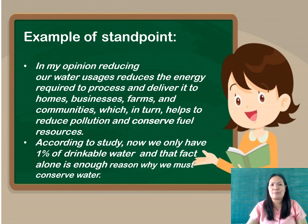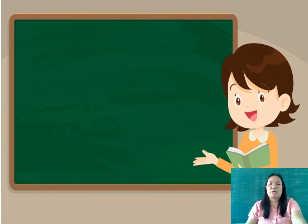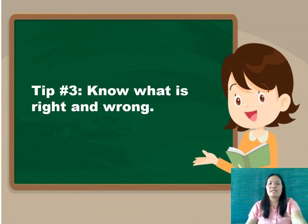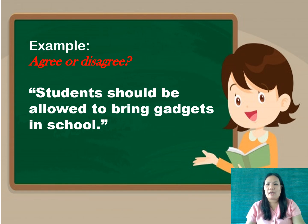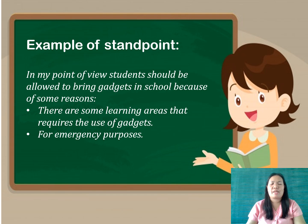Let us now move on to tip number three: Know what is right and wrong. Always defend or stand on what is right and just. Here is an example: Students should be allowed to bring gadgets in school. What is your stand on this statement — do you agree or disagree? Some may answer agree and some may answer disagree, but it is your own opinion. Here is an example of a standpoint: In my point of view, students should be allowed to bring gadgets in school because of some reasons — there are some learning areas that require the use of gadgets, and for emergency purposes.